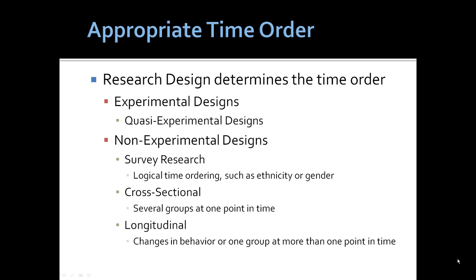A cross-sectional design also helps us in establishing a time order in ways that are very similar to the quasi-experimental design. We can look at groups and compare them at one point in time. If we look at groups at the same time and compare them on outcomes, this is what we mean by the cross-sectional design. A longitudinal design looks or examines changes in behavior in one group or one individual at more than one point in time.